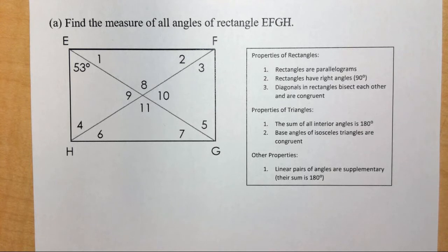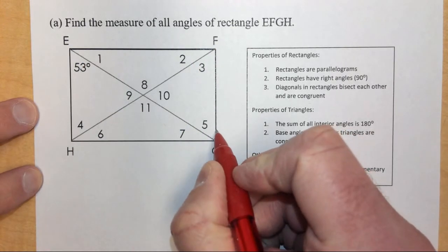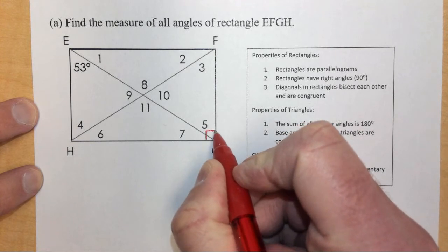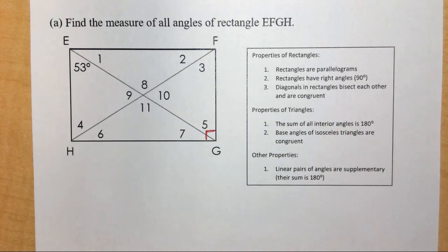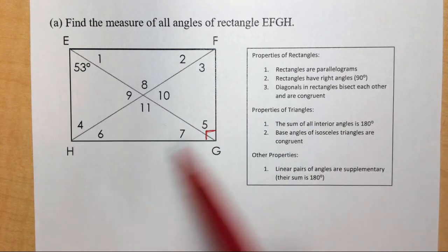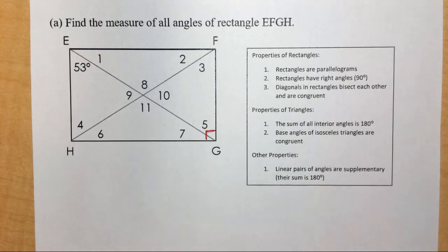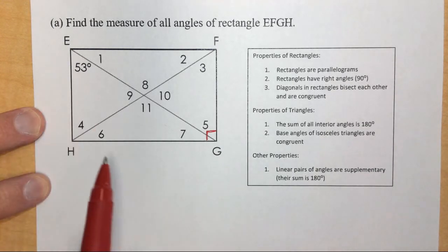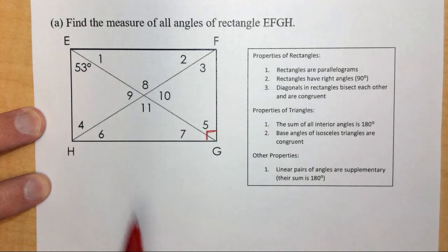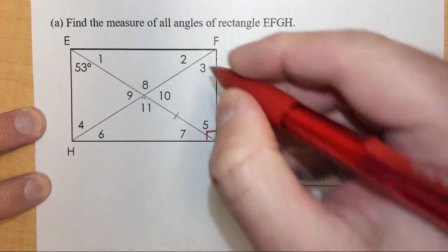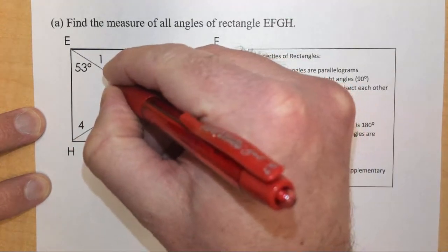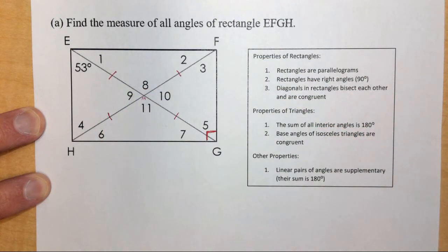We can use alternate interior angles to solve some of these problems. Also, all rectangles are made up of right angles, so each one of these vertices is 90 degrees. Lastly, the diagonals in a rectangle bisect each other and are congruent — so from E to G and from H to F are the same distance, and since they bisect each other, all of the parts meeting at the midpoint are also congruent.